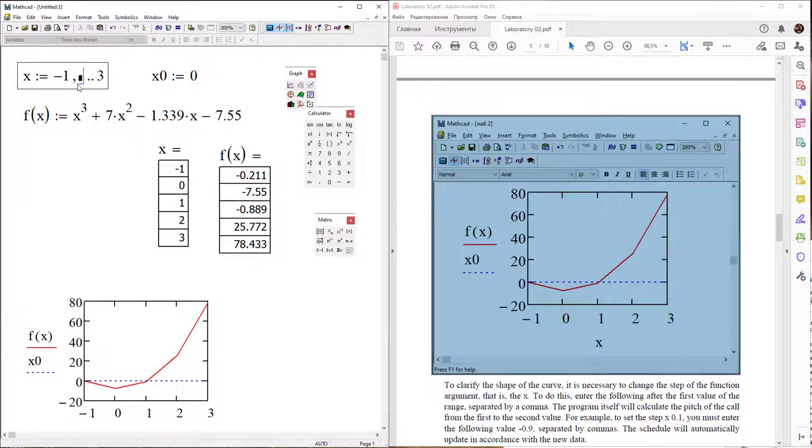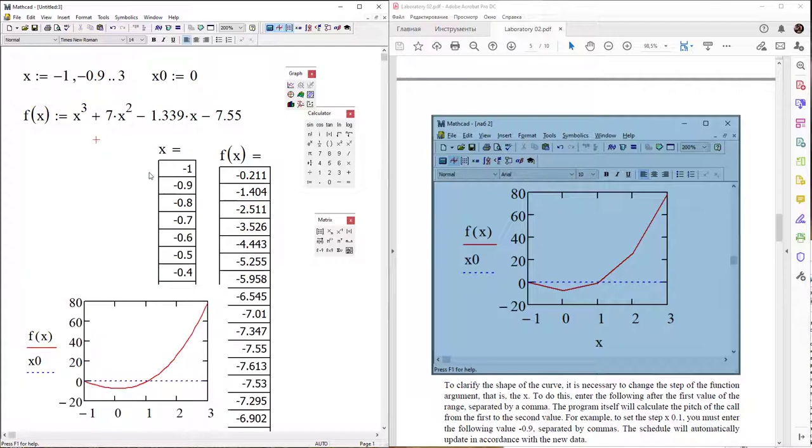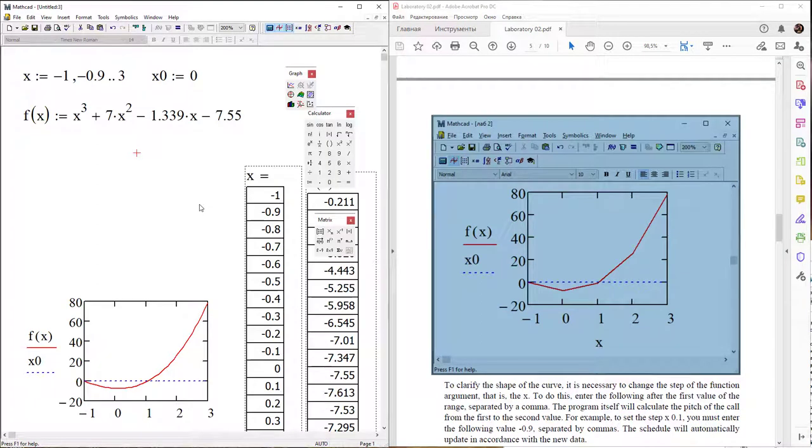Press next value, for example if you need step 0.1, next value minus 0.8, 1 minus 0 point. Then step delta x equals 0.1, so we have the right range of values for the function and x, and our curve looks better.